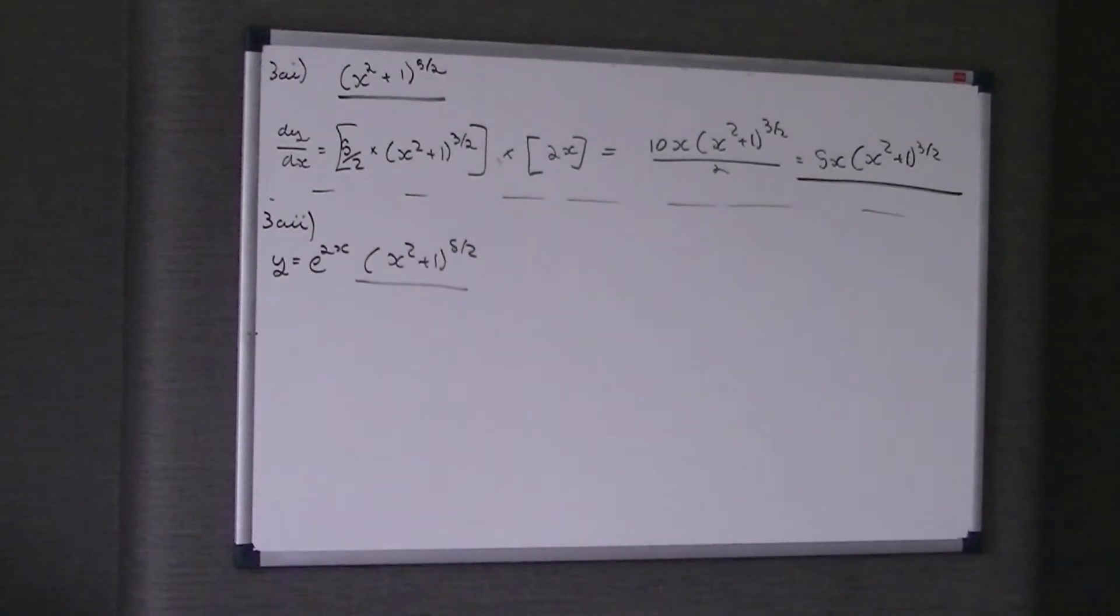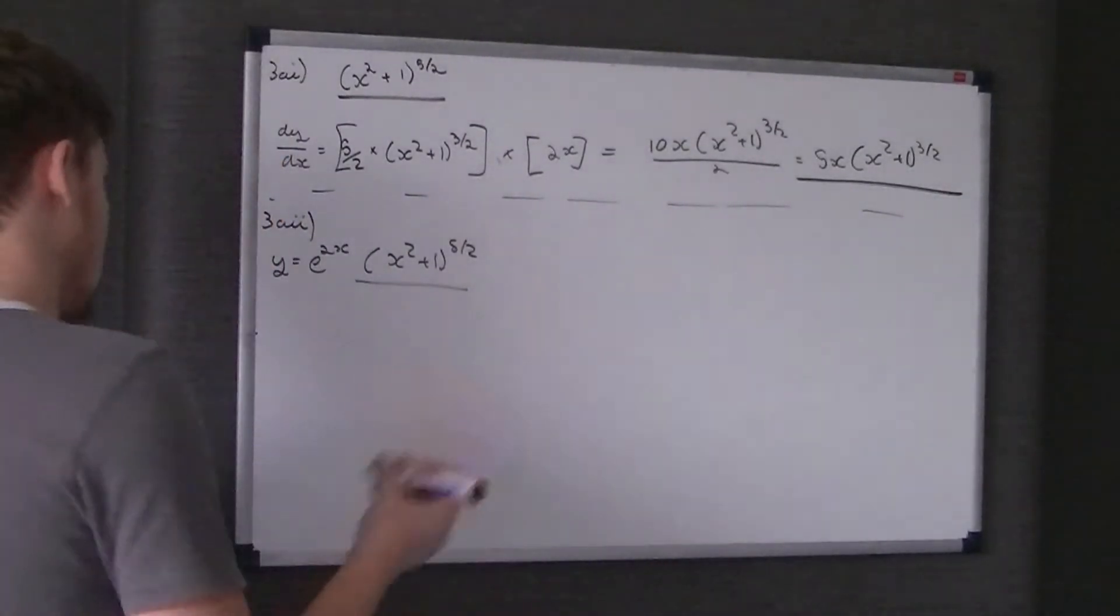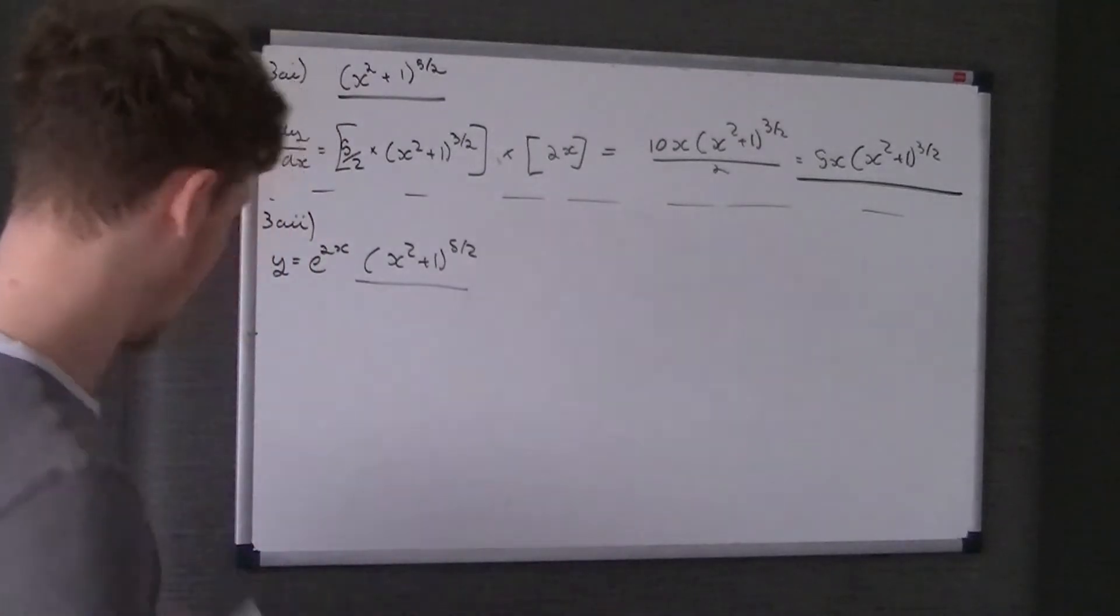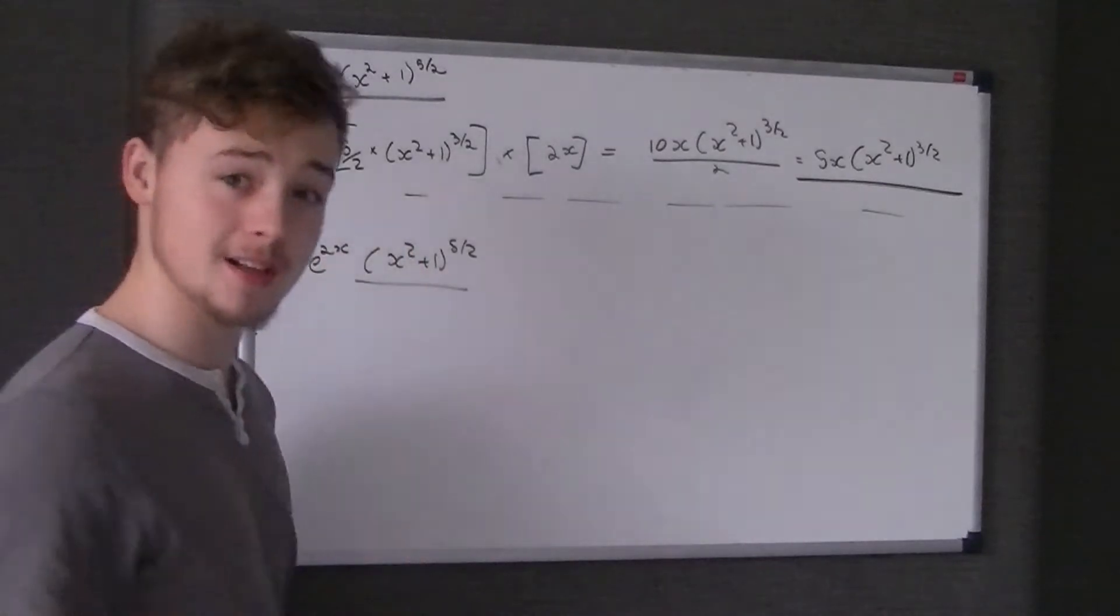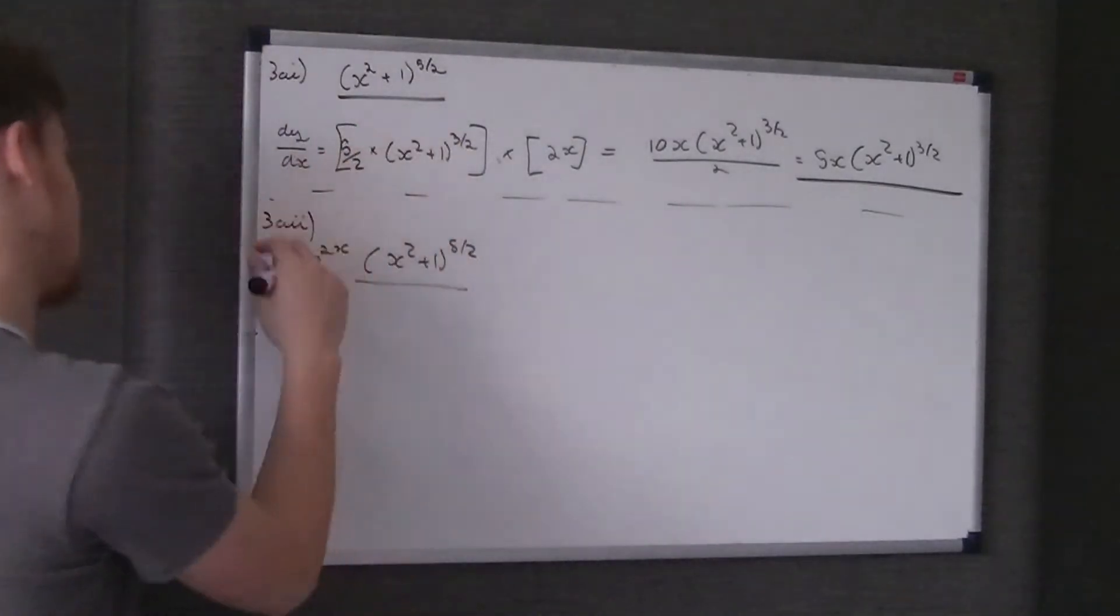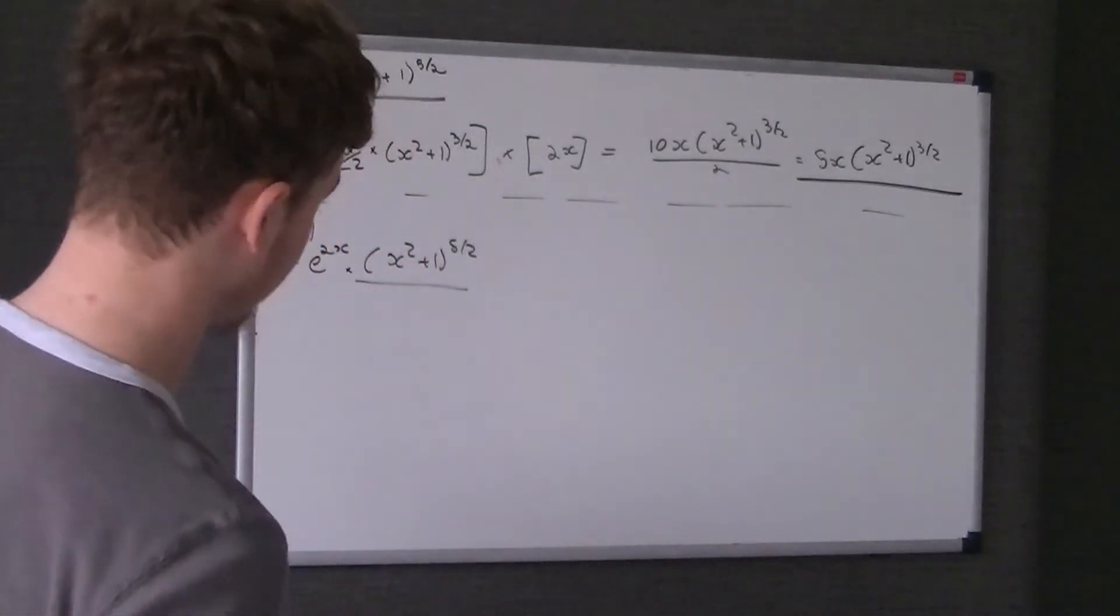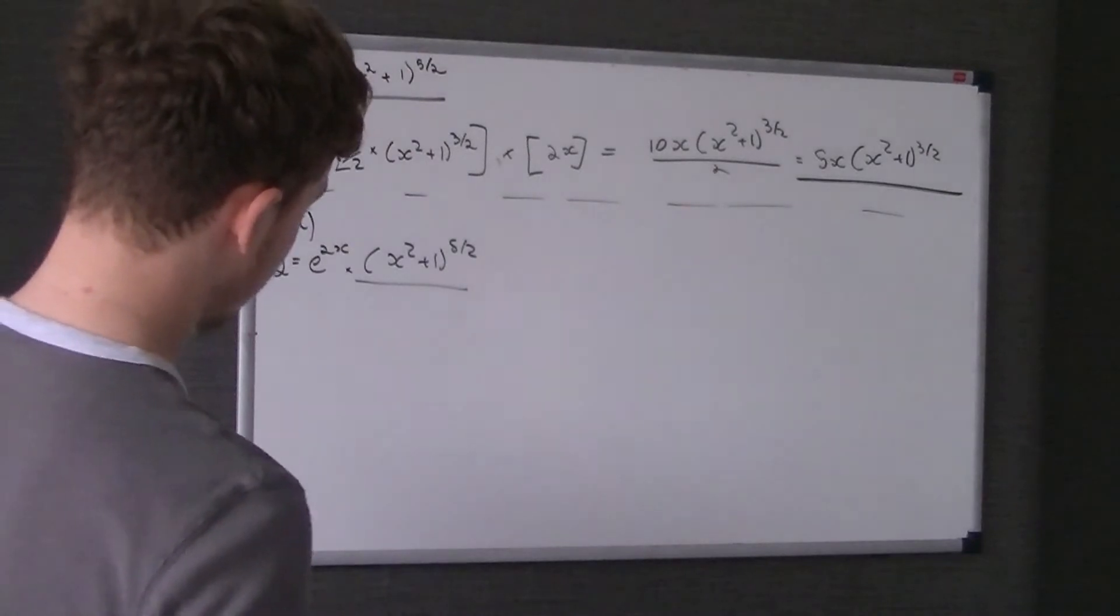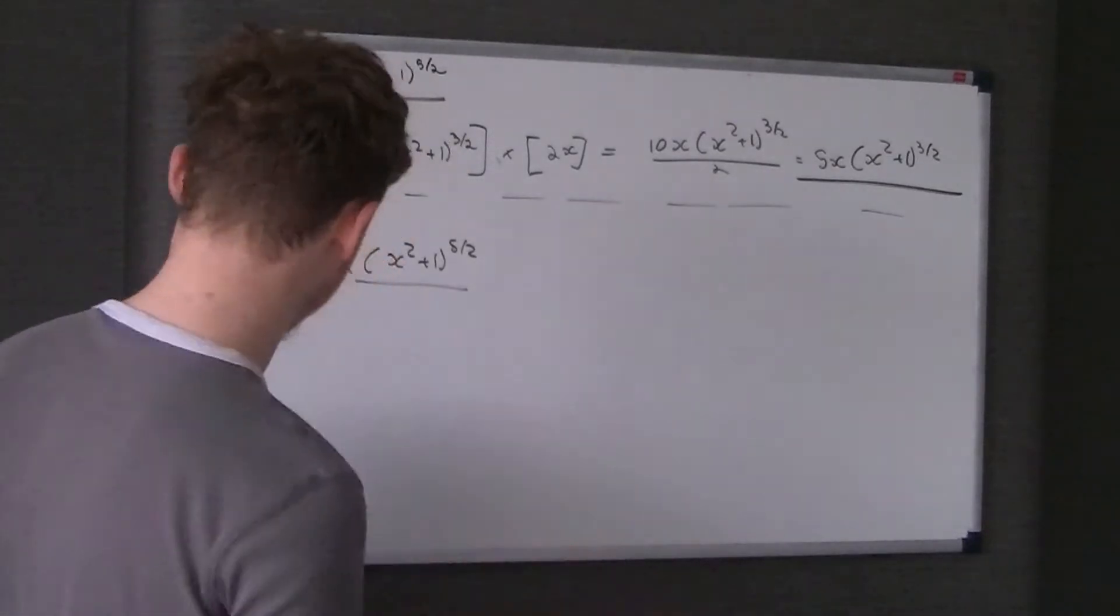We can't just simply differentiate the whole thing as one, because it's e^(2x) times (x² + 1)^(5/2). Therefore, we break this down into u times v, so we use the product rule of differentiation.